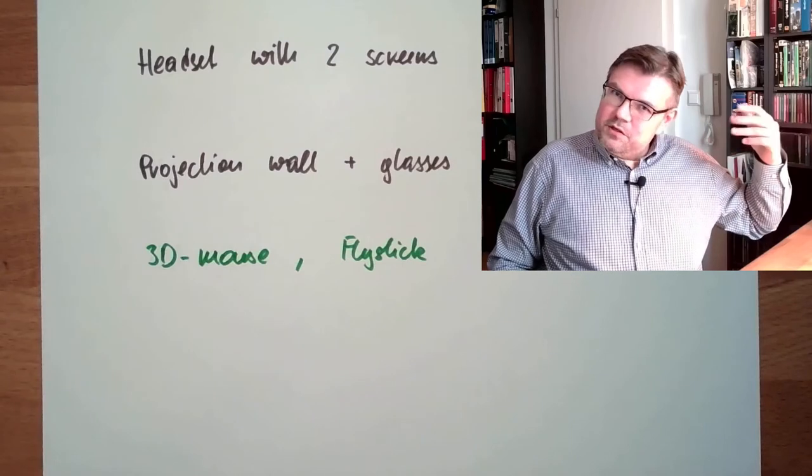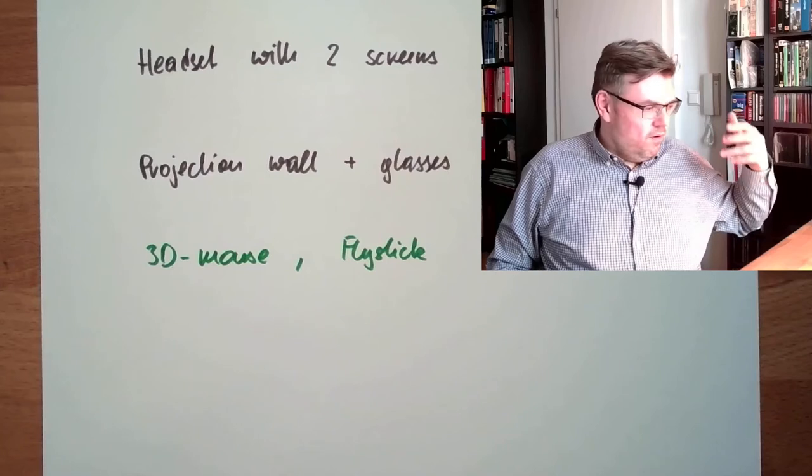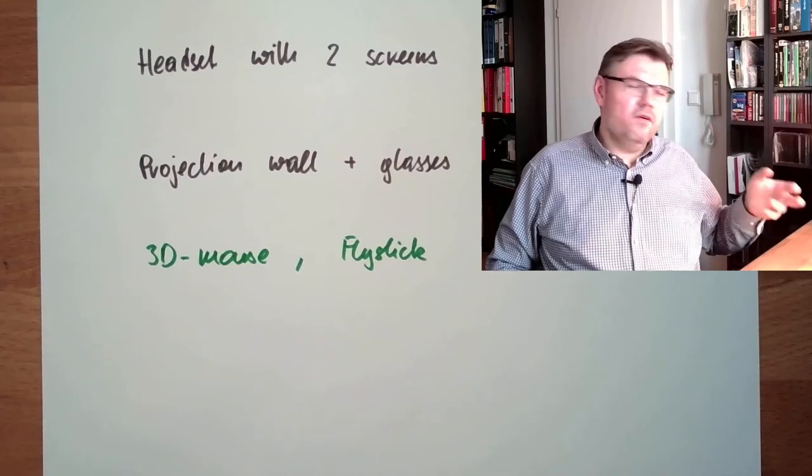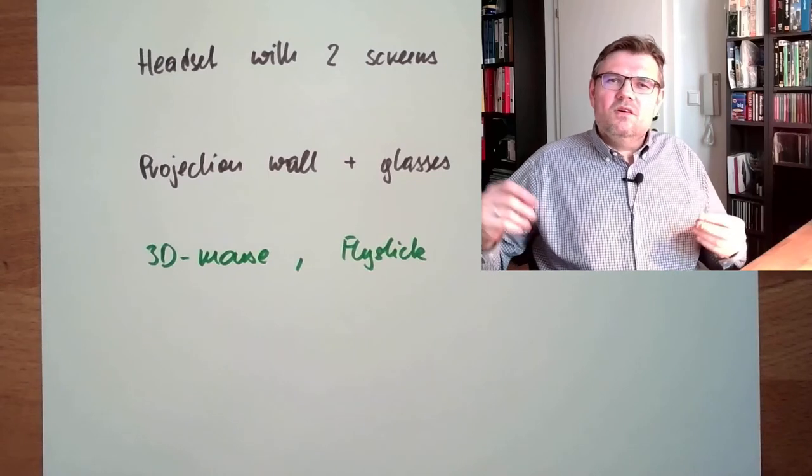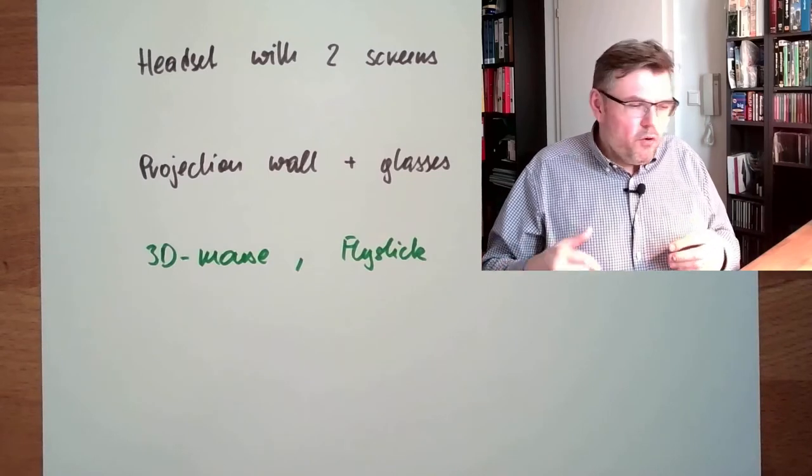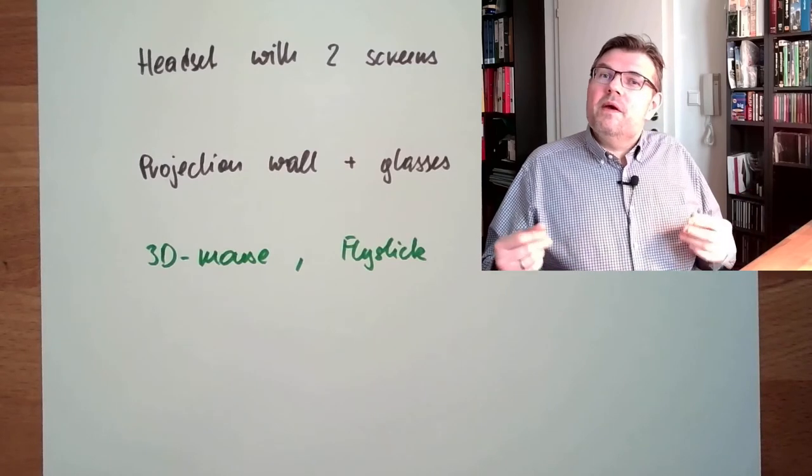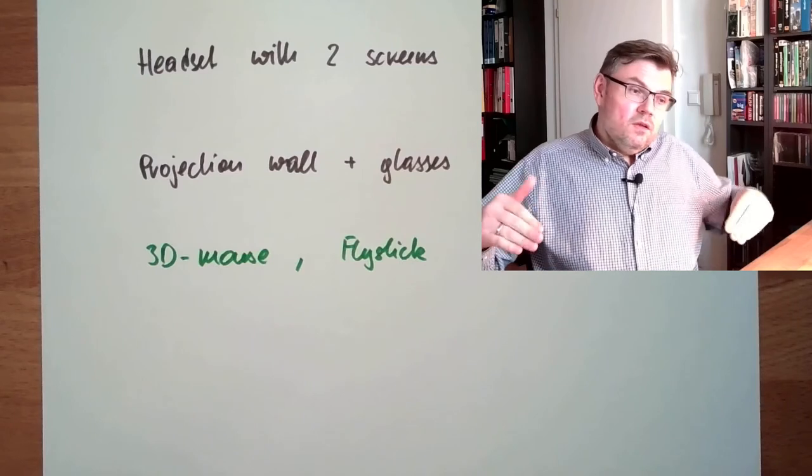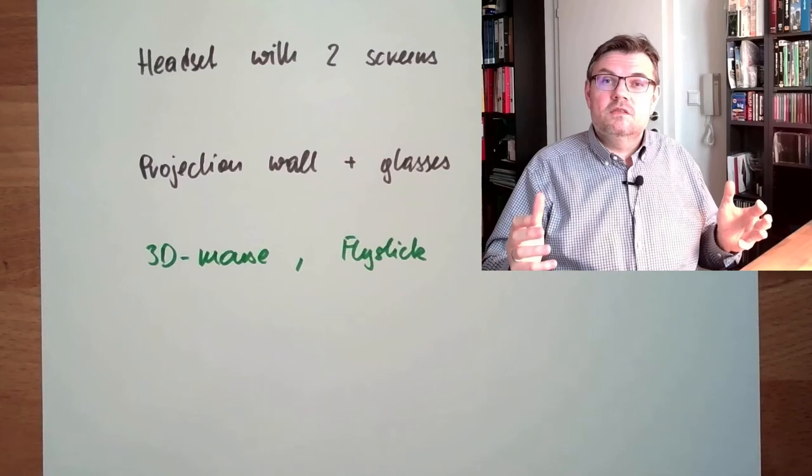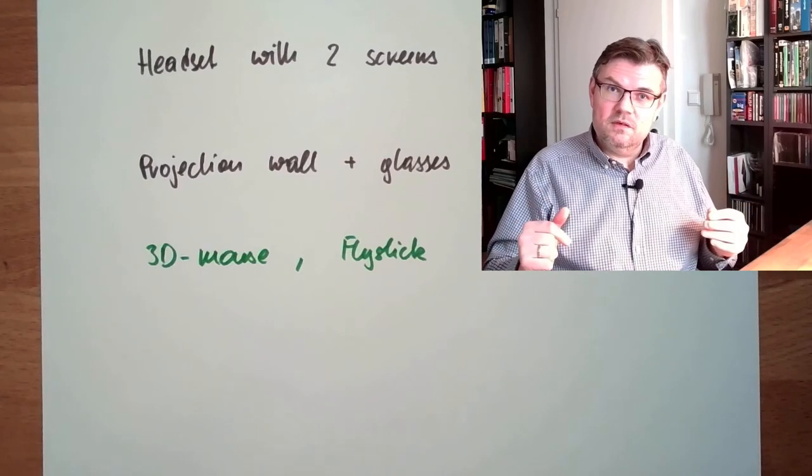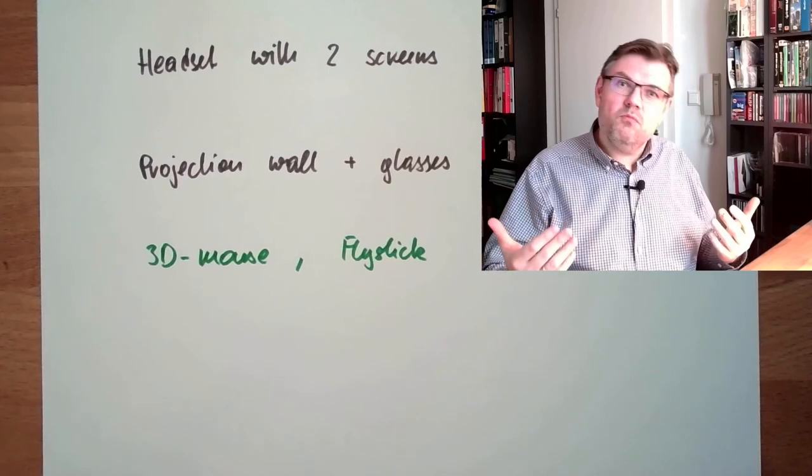The objects and so on, they are done with three-dimensional modeling software like Maya or Blender or other 3D objects. Then the scenery is composed with special software, World Editor or something like this. There are quite some software packages included to compose a three-dimensional experience for us, a virtual experience. It's not like you're using Word and describe something. You have to do a little bit more effort.